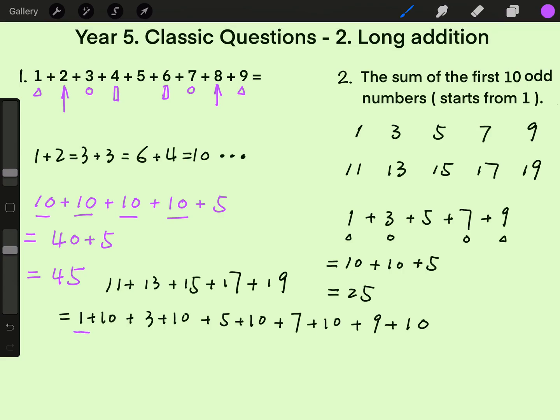The sum of 1, 3, 5, 7, and 9 is 25. And we have 1, 2, 3, 4, 5 tens, which is another 50. Finally, 75.